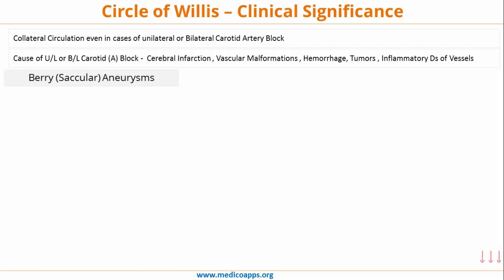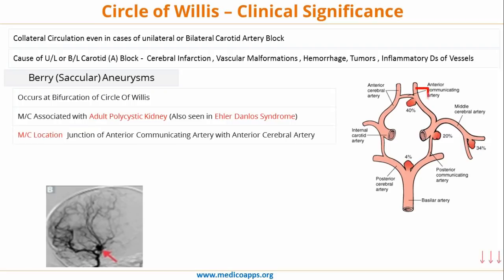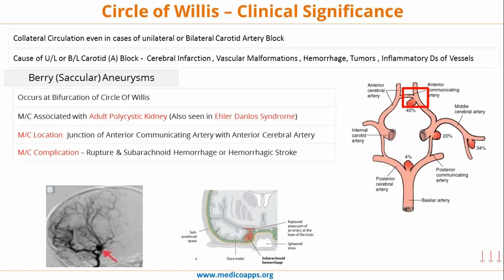One of the most important exam questions concerns berry or saccular aneurysms, which occur at bifurcation points of the Circle of Willis. The most common association is with adult polycystic kidney disease, and they can also be seen in connective tissue disorders like Ehlers-Danlos syndrome. The most common location is the junction of the anterior communicating artery with the anterior cerebral artery — approximately 40% of berry or saccular aneurysms occur here. The most common complication is rupture leading to subarachnoid hemorrhage and hemorrhagic stroke, with vasospasm being the leading cause of morbidity and mortality.